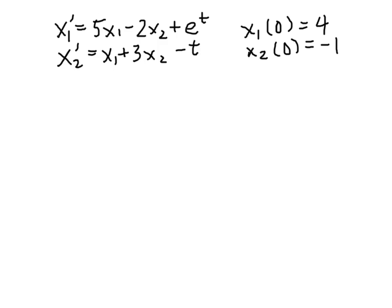So what we're looking at here, we have two variables, x1 and x2, each of which are functions of time. So let me indicate that: x1 is x1(t), and x2 is x2(t).